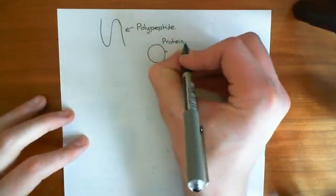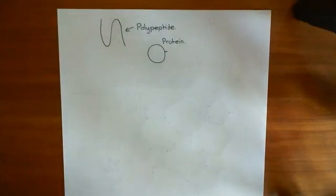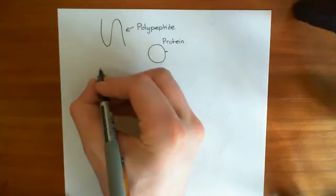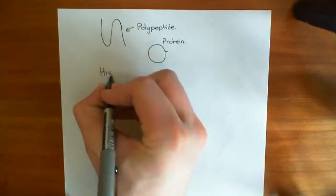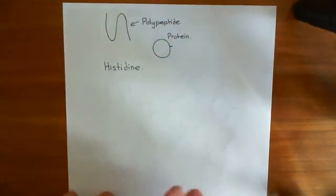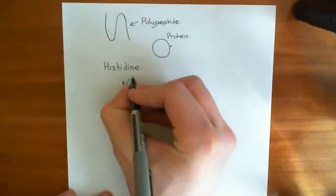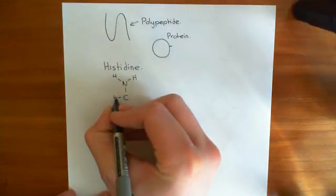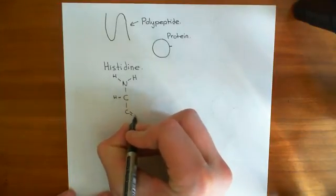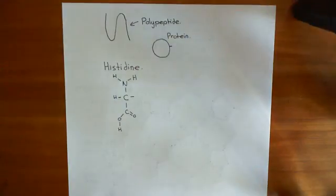Now let's have a look at one of these amino acids that is very good at having prosthetic heme groups stuck on the side of it — and that amino acid is histidine. Starting with the basic amino acid structure: we have the alpha carbon, the amino group, a hydrogen off the alpha carbon, a carboxyl group, and then the R group off the alpha carbon is what makes the amino acid specific. At the moment, this is the generic structure for all amino acids.